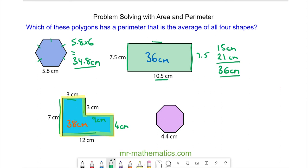For the octagon, all the lengths are equal, so we have 8 lots of 4.4 centimeters, which is 35.2 centimeters.